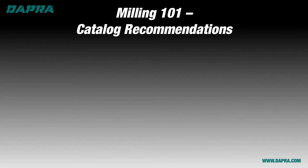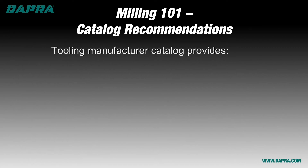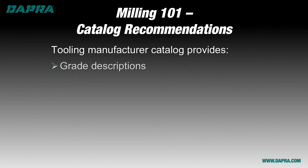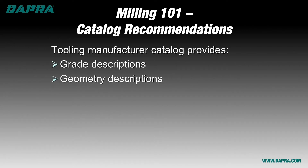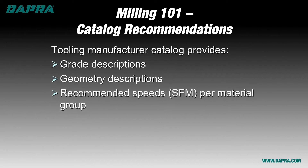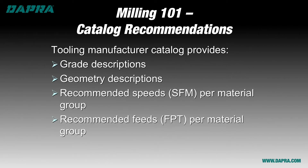Recall from video number five on choosing your cutting edge geometry that when you refer to your cutting tool catalog for help in setting up your milling application, you're generally going to be given these pieces of information: your grade descriptions, geometry descriptions, cutting speeds in surface feet per minute, and cutting feed rates in feed per tooth. We talked about how important each of these is for a successful milling program.